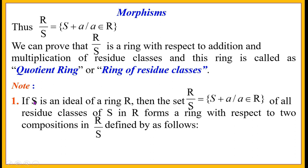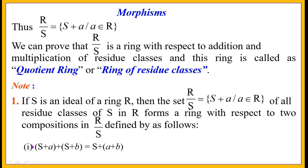Note: if S is an ideal of a ring R, then the set R/S, which is the set of all cosets S plus A such that A belongs to R, forms a ring with respect to two compositions defined as follows. The first operation is addition: the sum of two cosets S plus A and S plus B equals S plus (A plus B).